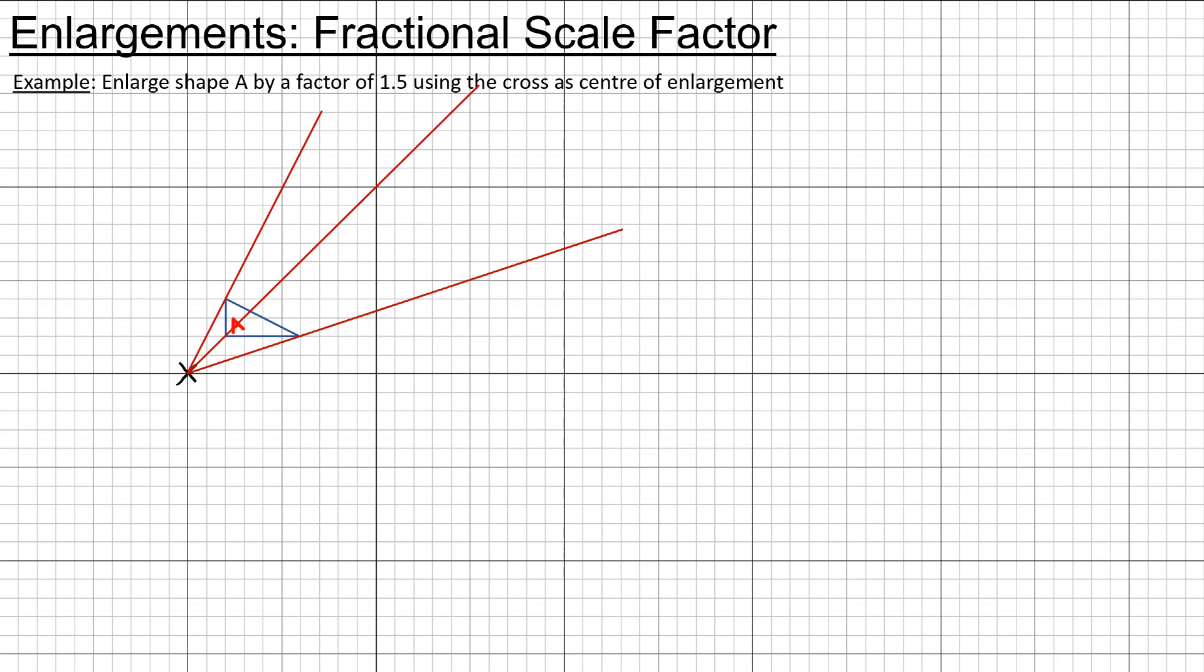Now I should notice that to get to this point here I need to go across 2 and up 2. But 2 times 1.5 is 3, so that means I need to go across 3 and up 3 in the enlargement.